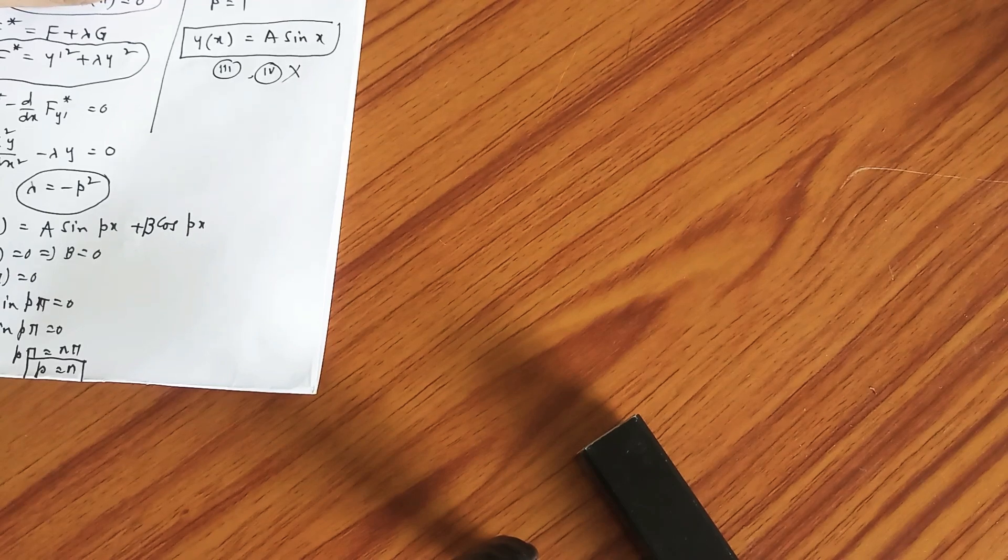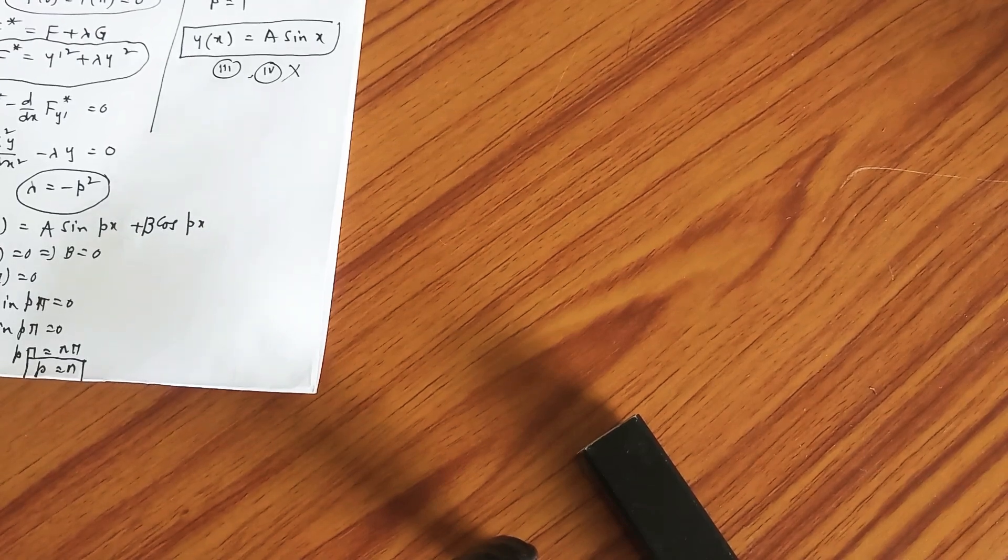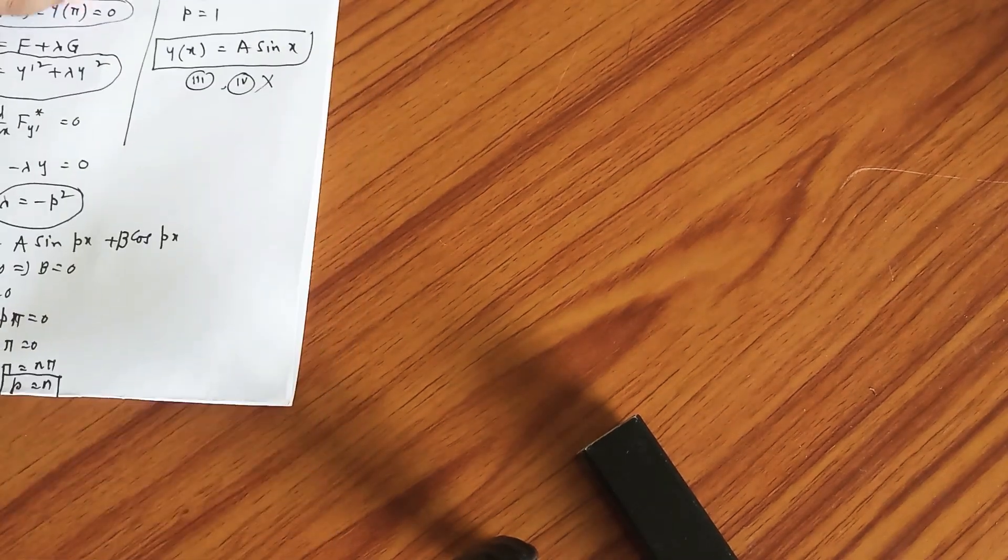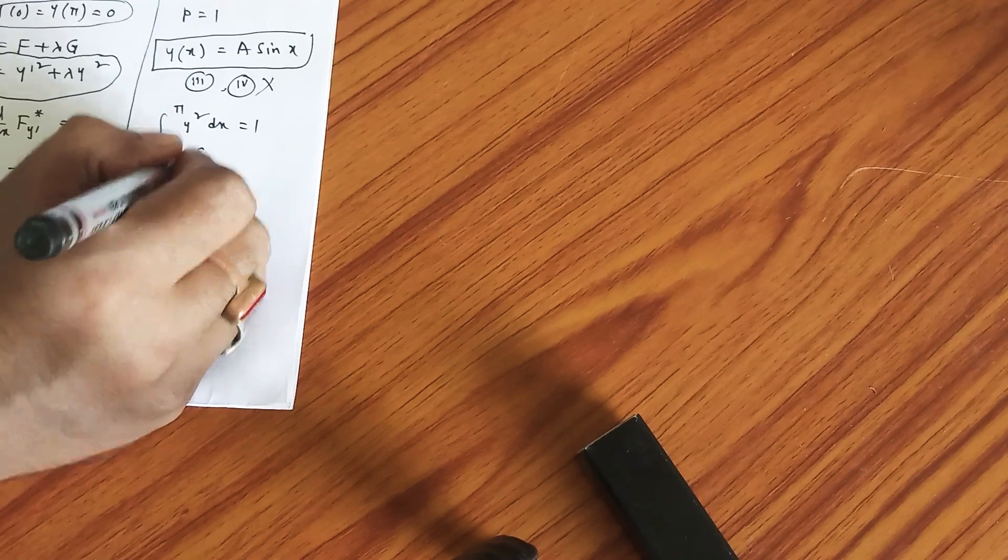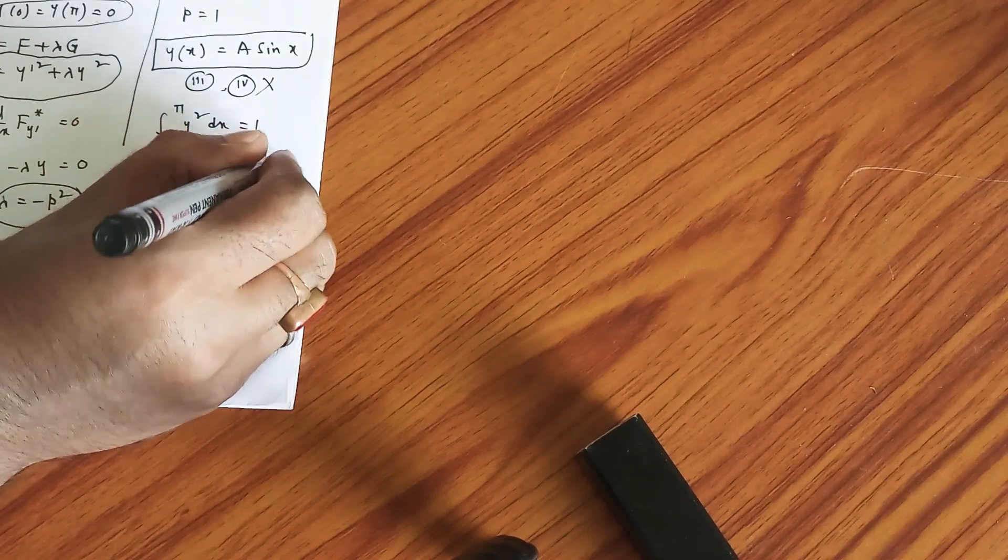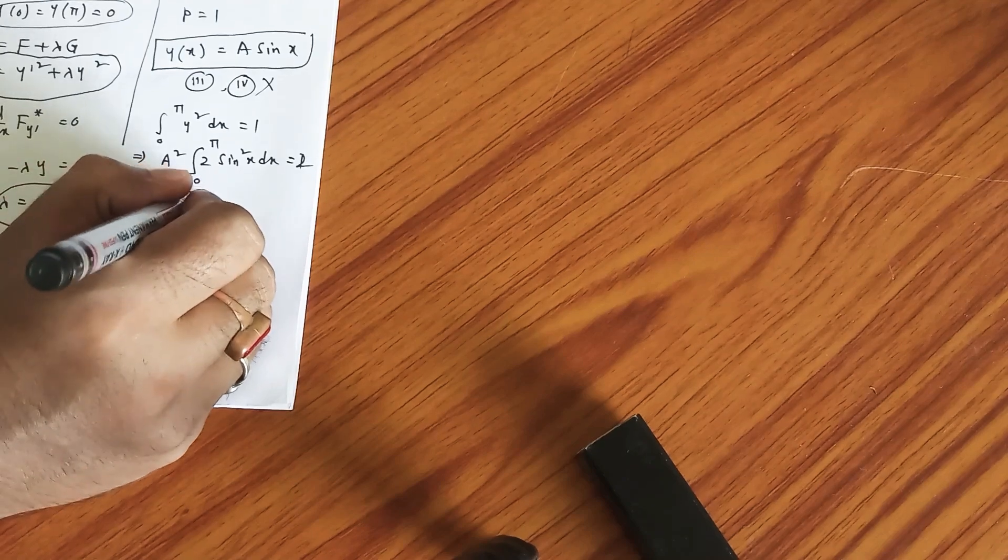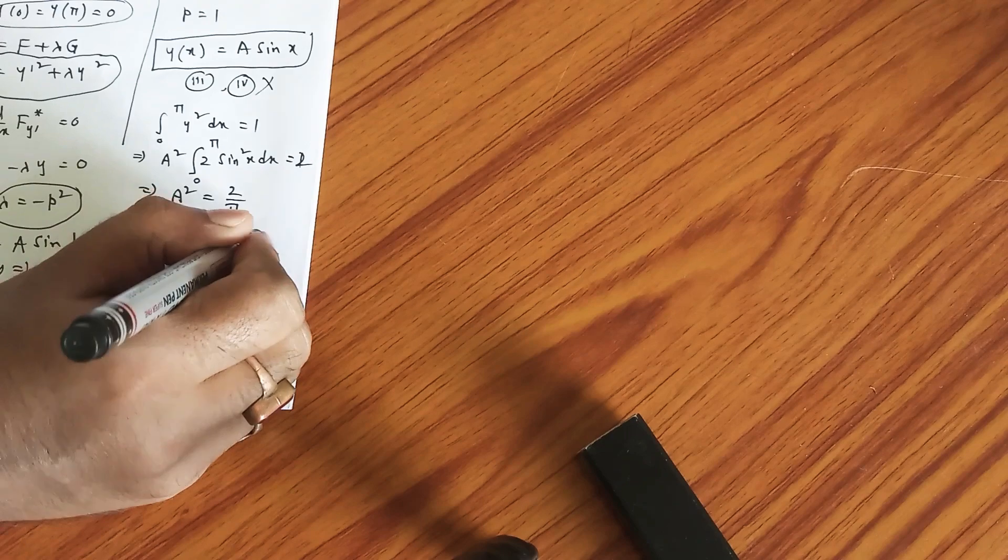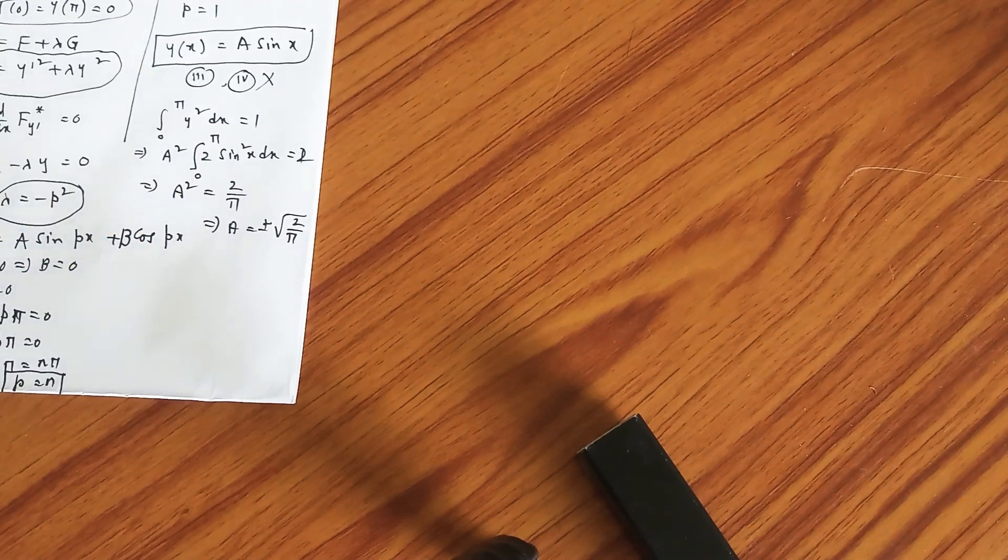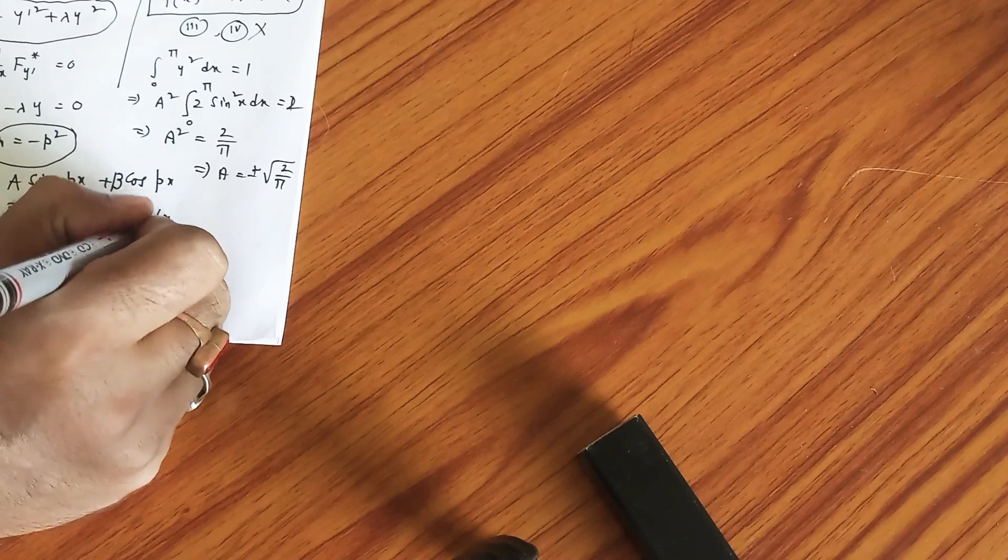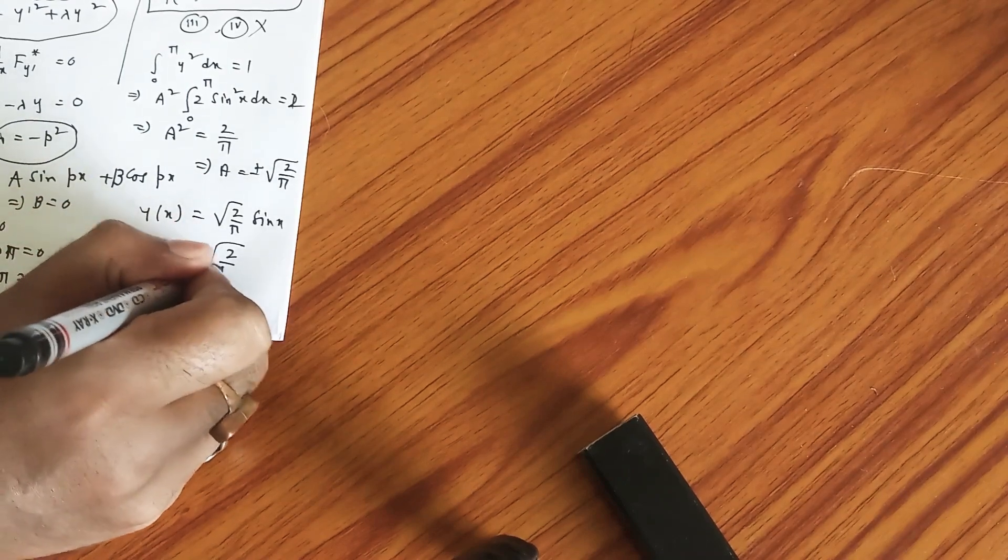Now we have to decide whether first option or the second option is correct or both are correct with the help of this integration equation. ∫₀^π y² dx = 1, that is a² ∫₀^π sin² x dx = 1. Multiply both sides by 2, then use the formula of cos 2x, and finally you will get a² = 2/π, so a = ±√(2/π). Finally we are getting y(x) as √(2/π) sin x and y(x) as -√(2/π) sin x.